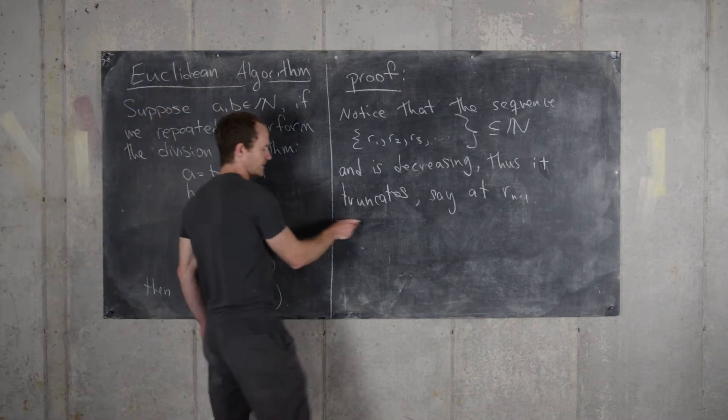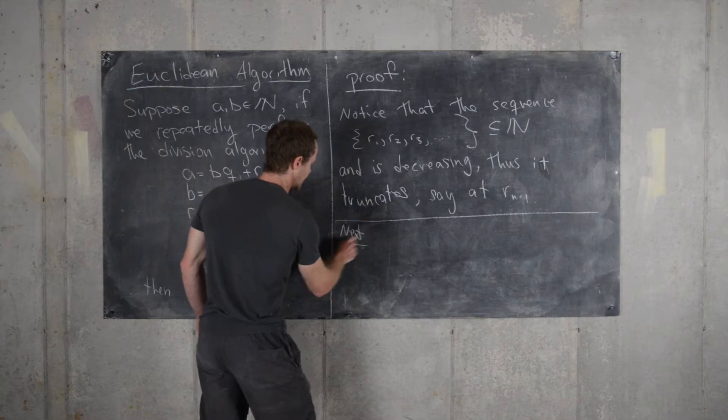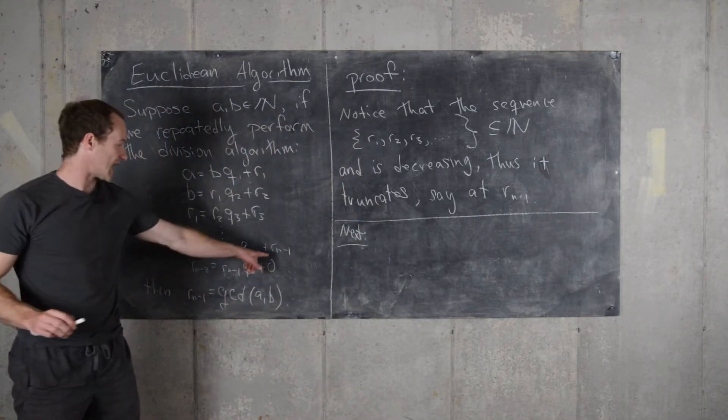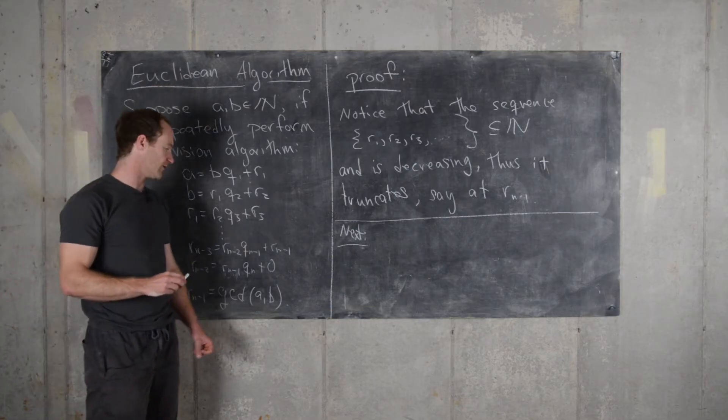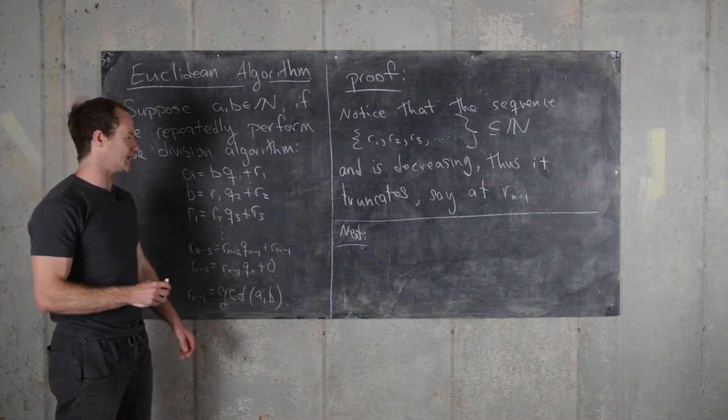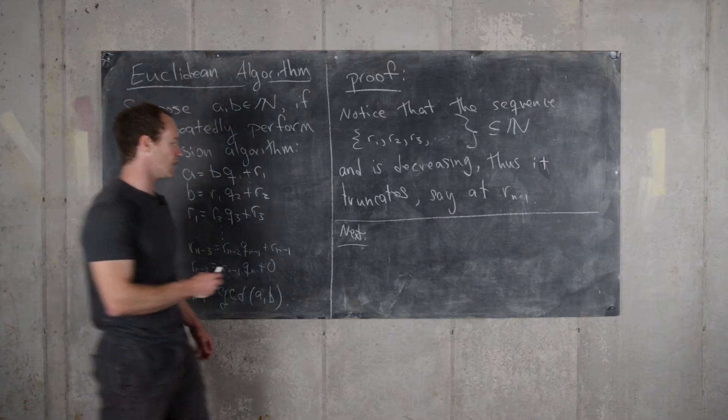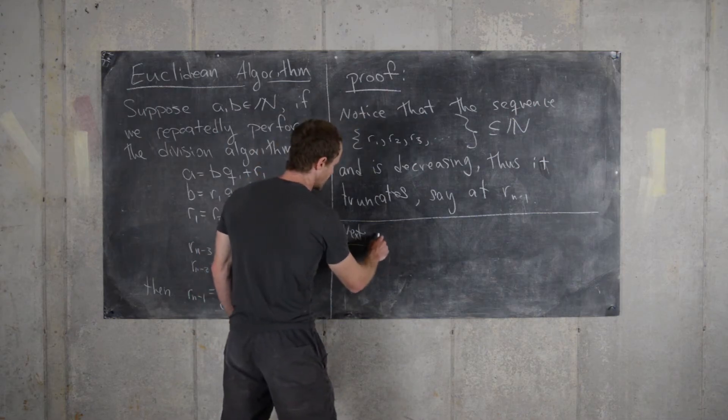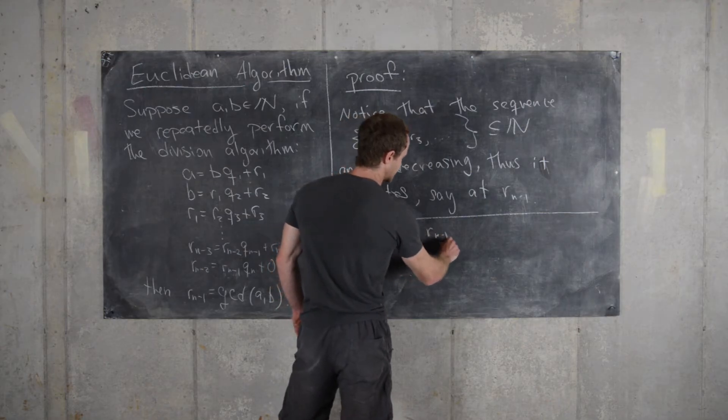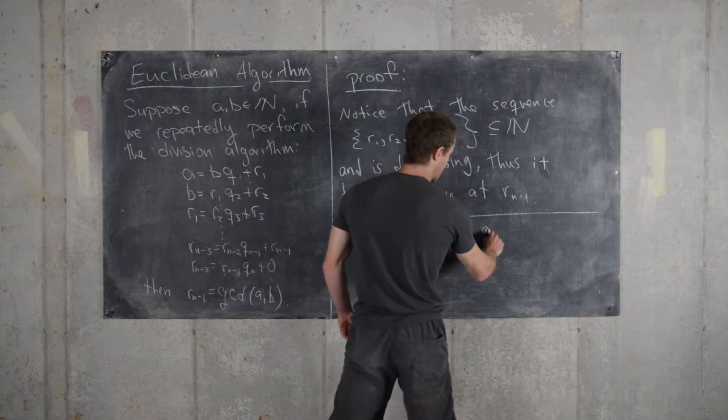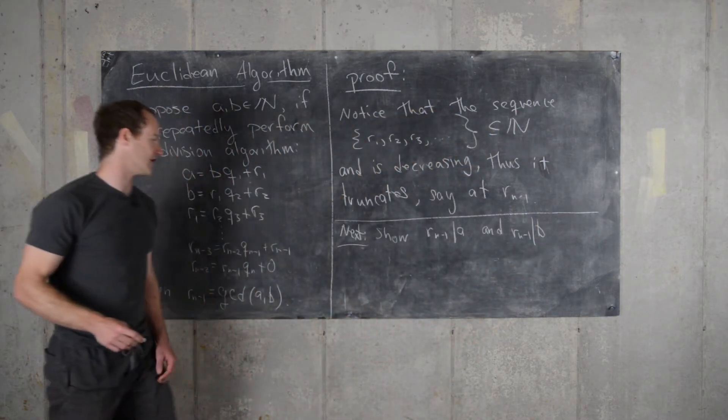So the next thing we need to prove is that this last positive remainder is actually the GCD. We'll first prove that it's a common divisor, and then we'll show that it's the greatest such common divisor. So let's make this claim. We're going to show that R N minus 1 divides A and R N minus 1 divides B. So it's a common divisor.